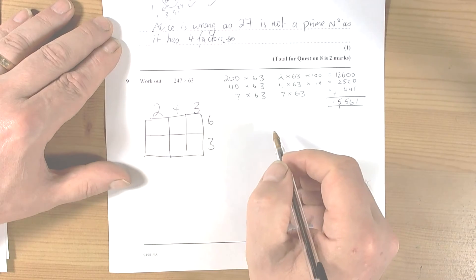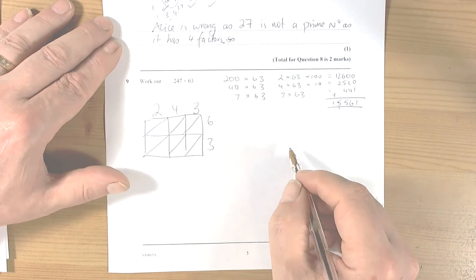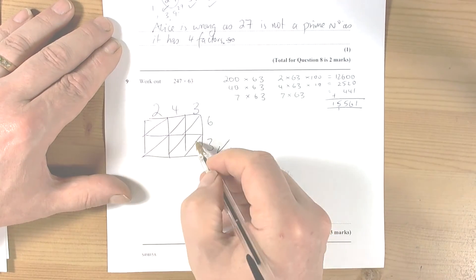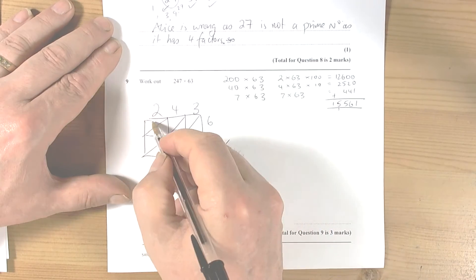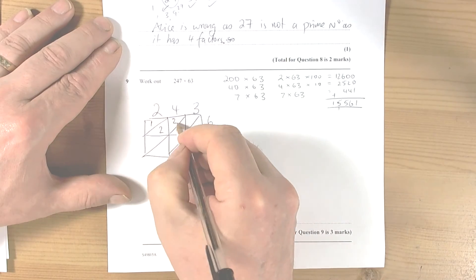So I break up the calculations into their individual digits and create multiplication boxes, put in the diagonal lines. Because this method, remember, it means add up the diagonal digits that come from doing the multiplications. So 2 times 6 is 12, 4 times 6 is 24, 3 times 6 is 18.